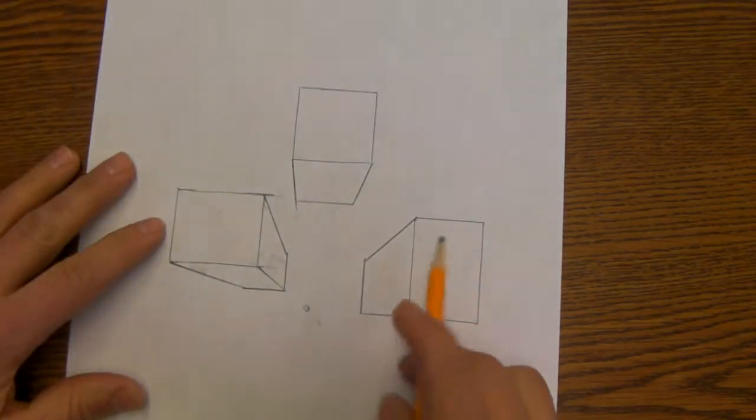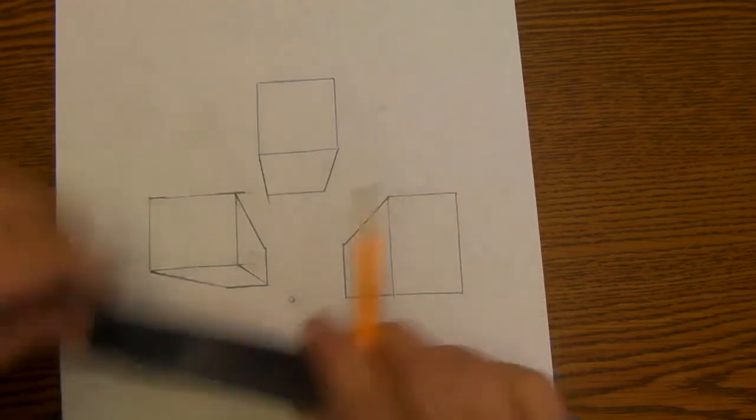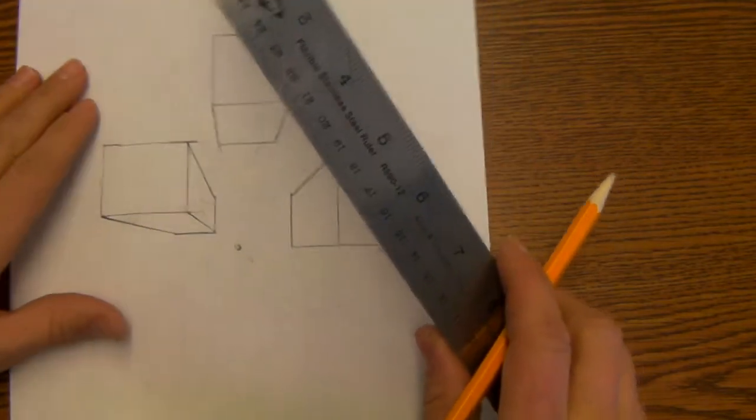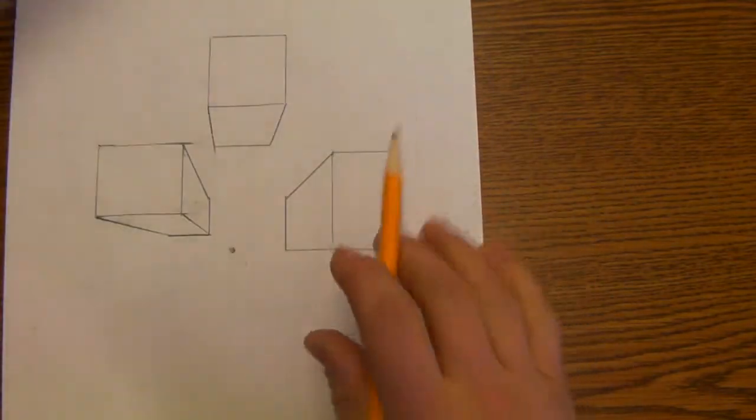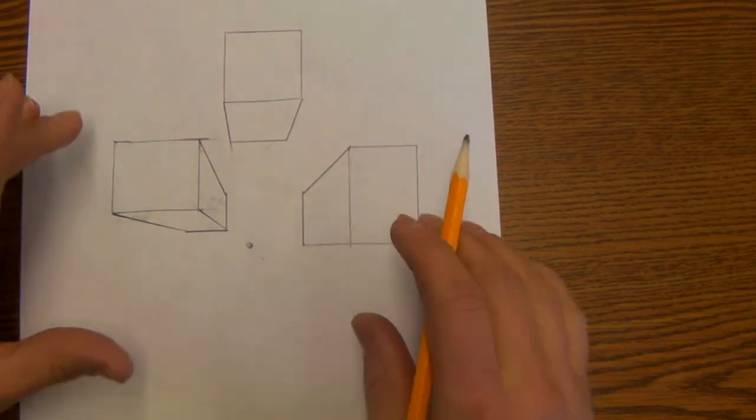So you have one, two, three, and on the assignment remember we're going to have five, but for the purpose of this lesson we only have three. Now the next thing you're going to do is, you want to figure out a way to have all the boxes connected.